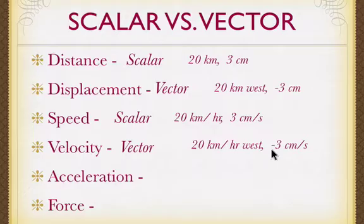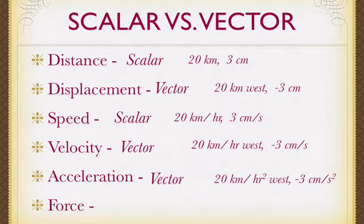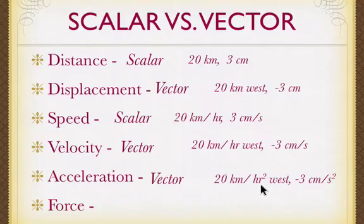Negative velocity does not mean you're slowing down — we'll talk about that more in the future. Acceleration is also a vector. We have to know which way the acceleration is headed so we can tell whether we're slowing down or speeding up. For example: 20 kilometers per hour squared to the west, or 3 meters per second squared in the negative direction. So acceleration includes magnitude and direction.